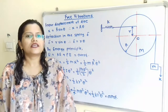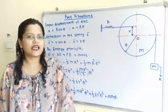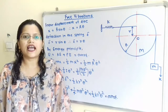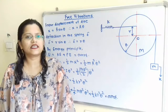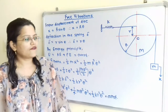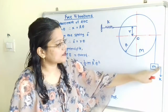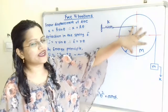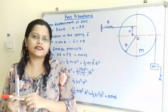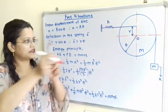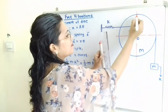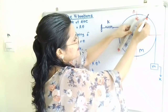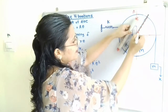We are going to solve this question by using the energy method. We have to first find out the kinetic energy as well as the potential energy in the system. When this mass m is displaced through a distance small x, the disk is also getting rotated through angular displacement theta. Suppose the original position of point A, then the disk is rotated through an angle theta.